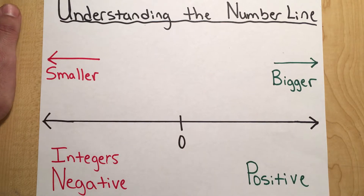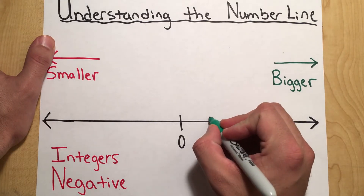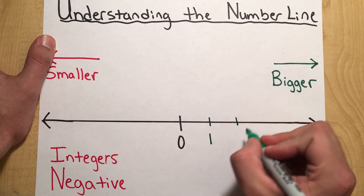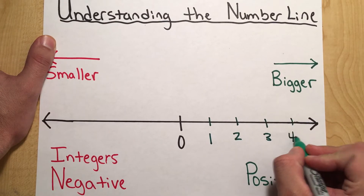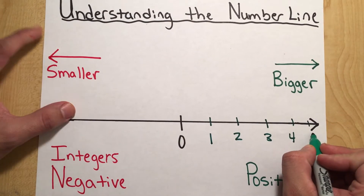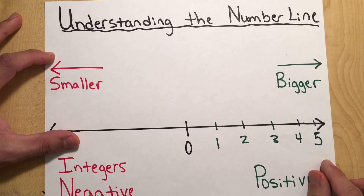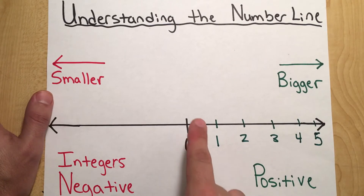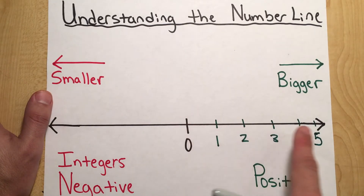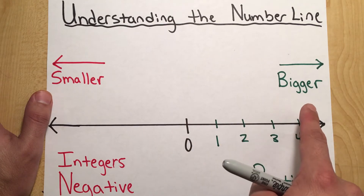To the right of the number line — you guys have seen this before probably since first grade — that's where our numbers start. So I'm going to put some numbers here: one, two, three, four, and five. The number line is infinite, which means it could go on forever. And as we move to the right, the further we move, the bigger our numbers get.